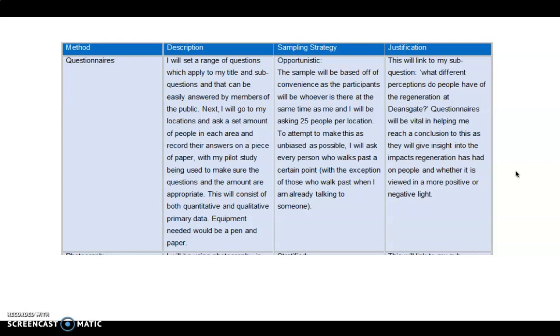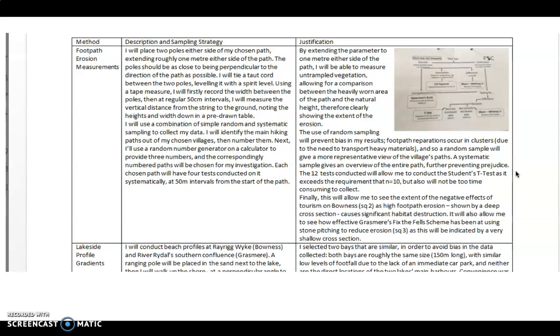The second one goes into much more detail. Here you can see they're looking at measuring footpath erosion and measurements, so that's what they're going to be doing. They've gone into lots of detail and I really like the amount of detail they've included in this. It's really clear about exactly how they're going to carry it out. They talk through it in a lot of detail. They justify and explain their sampling strategy. Also here they really justify why they've used their sampling strategy. It says the use of random sampling will prevent bias in my results, and I think that's really key to look at. I just want you to think about your methodology and think about the levels of detail you've included and look at those last two examples, which are varying levels of detail, and just think about what does yours look like in comparison to that.